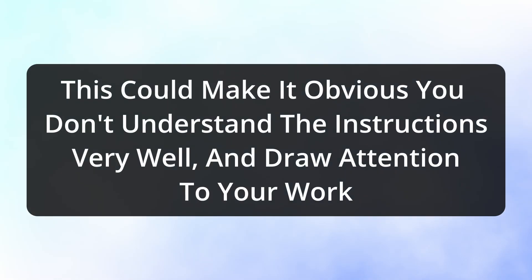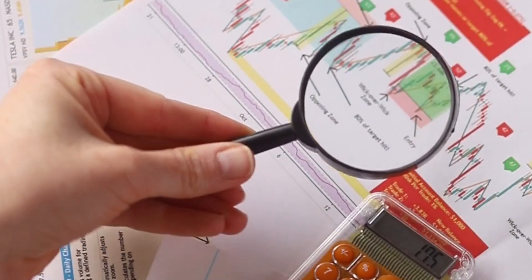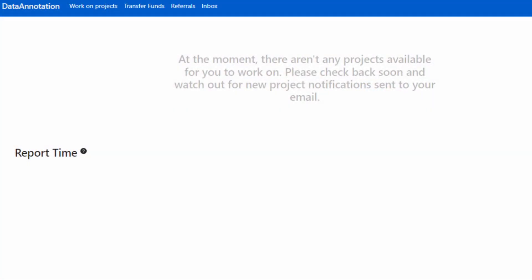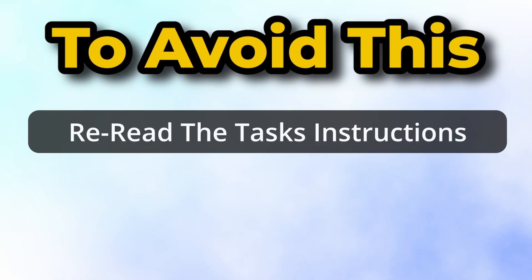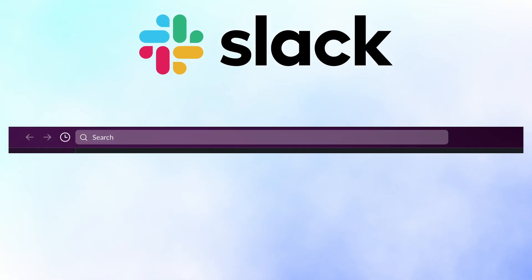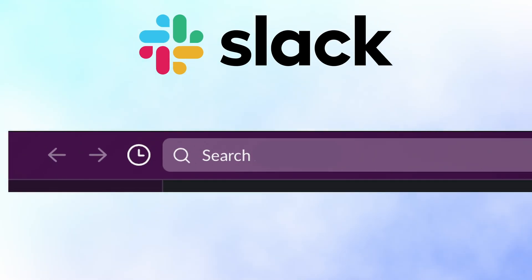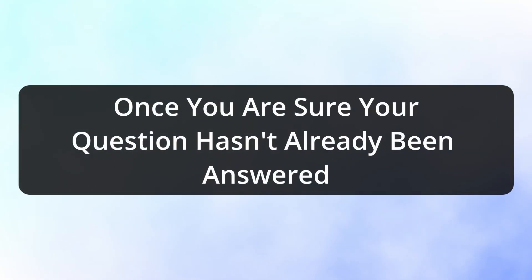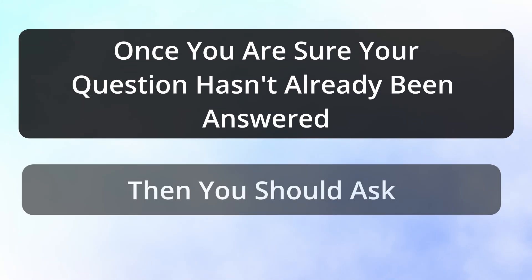Doing this makes it obvious to the project admins that you haven't paid attention to the instructions, and as a result they may take a closer look at your work, which could lead to you getting kicked from the project and even the site. To avoid this, reread the task instructions and check other resources like a Slack chat — use the search function to check if your question has already been asked. Once you're sure it hasn't been answered, then you should ask.